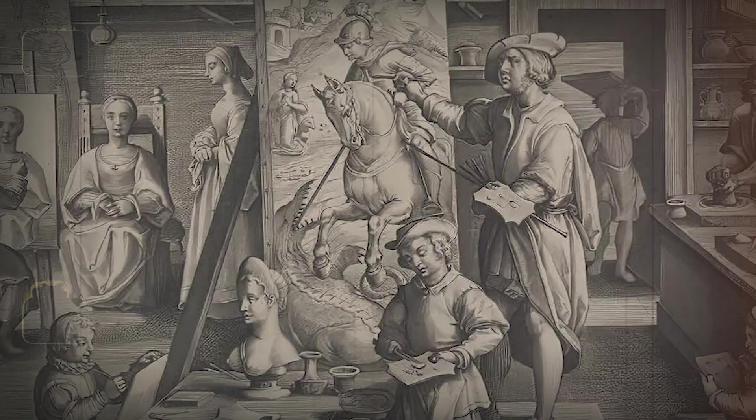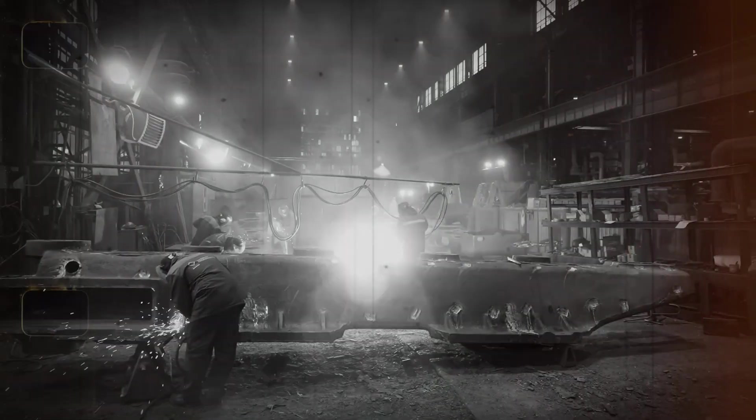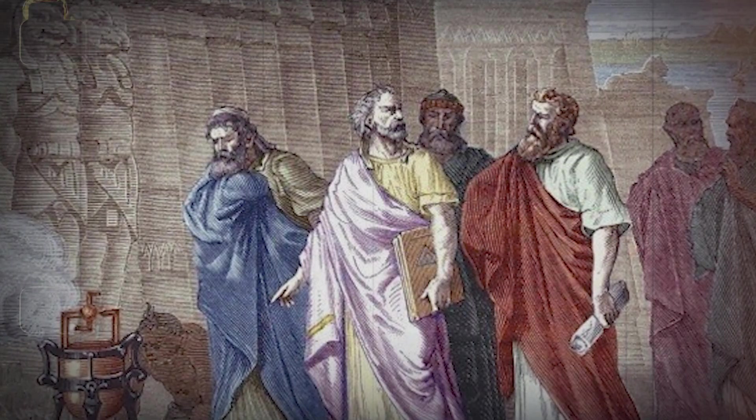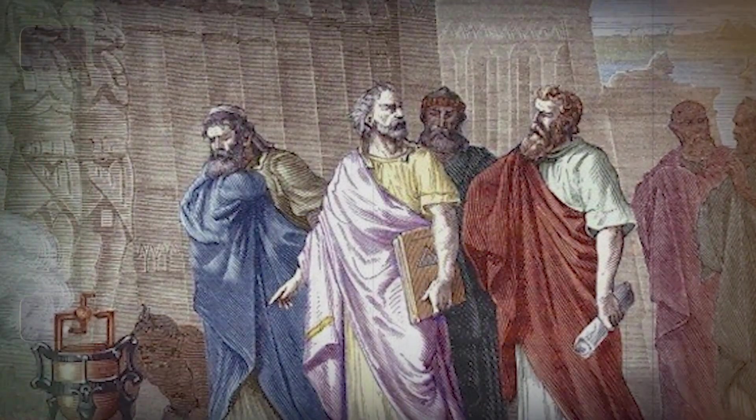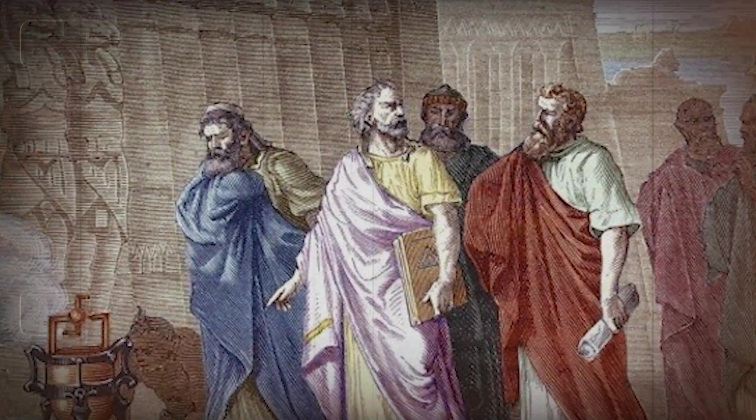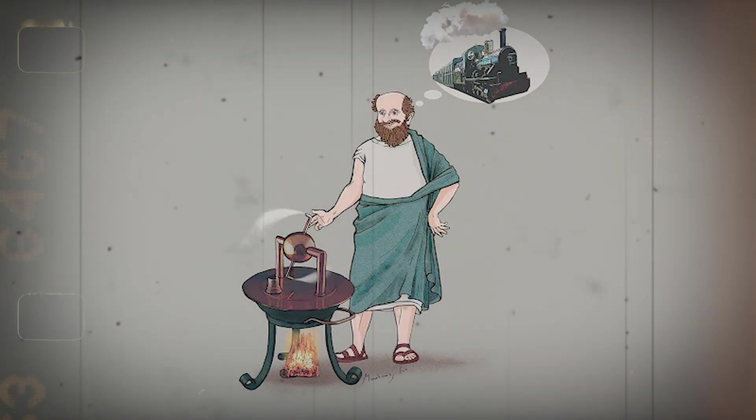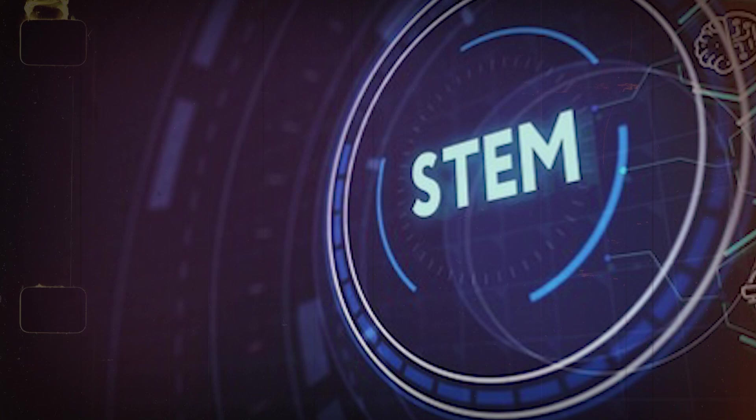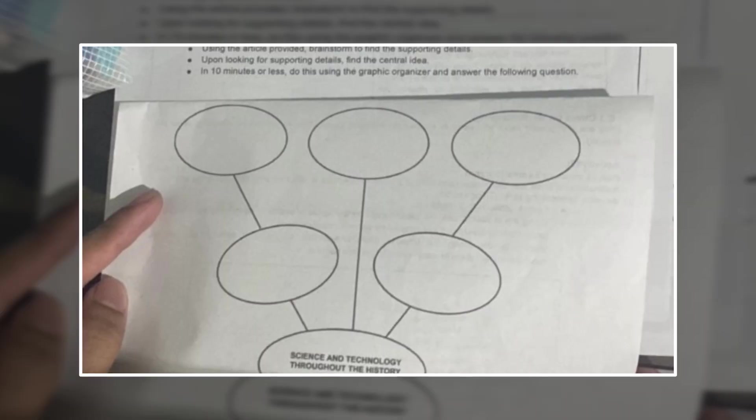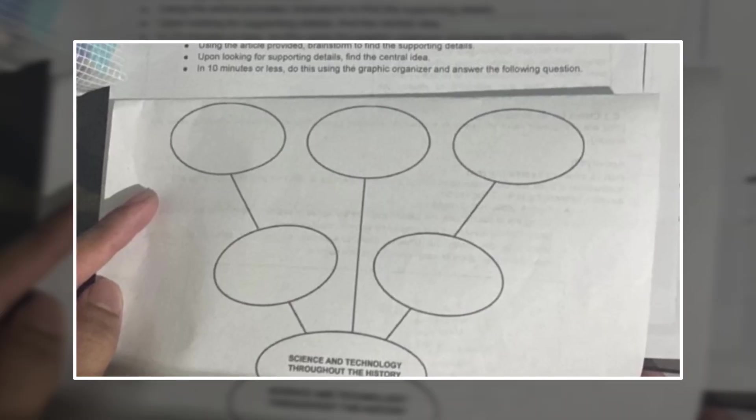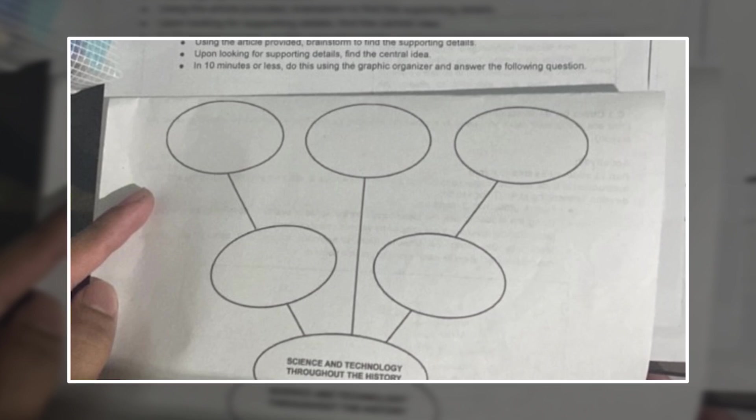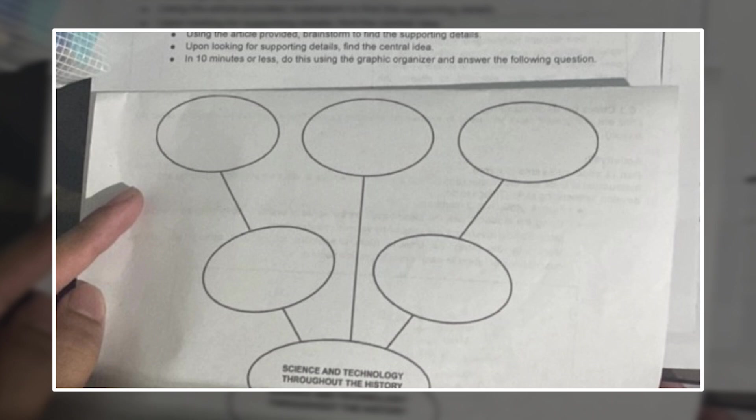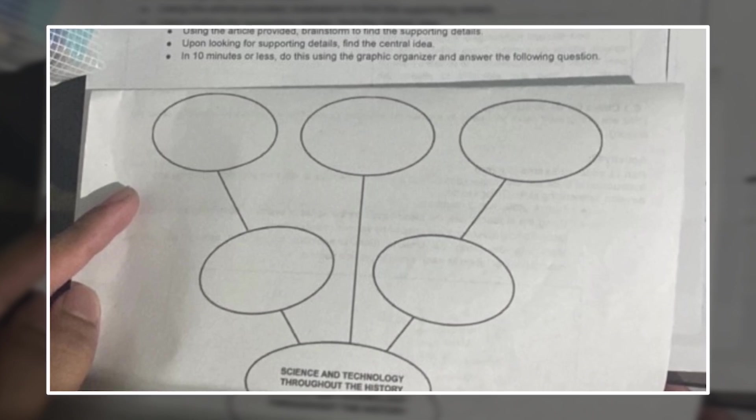Scholars rediscovered Hero's work in the Renaissance, which played an important role in later technological developments. While studying ancient texts, scholars found that many of the principles and inventions described by Hero could be applied to new technologies. That renewed interest in ancient technology paved the way for future innovations. Hero's Aeolipile was no longer just a curiosity, but part of a bigger historical narrative of technological progress.